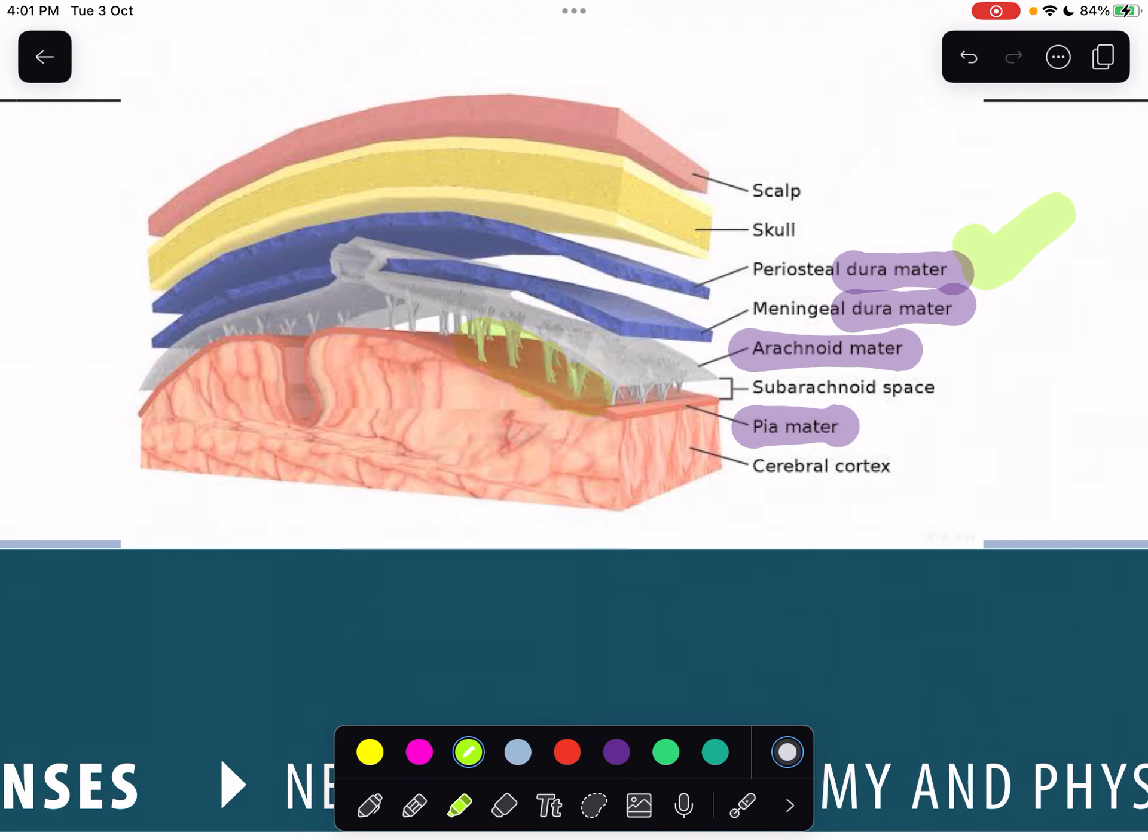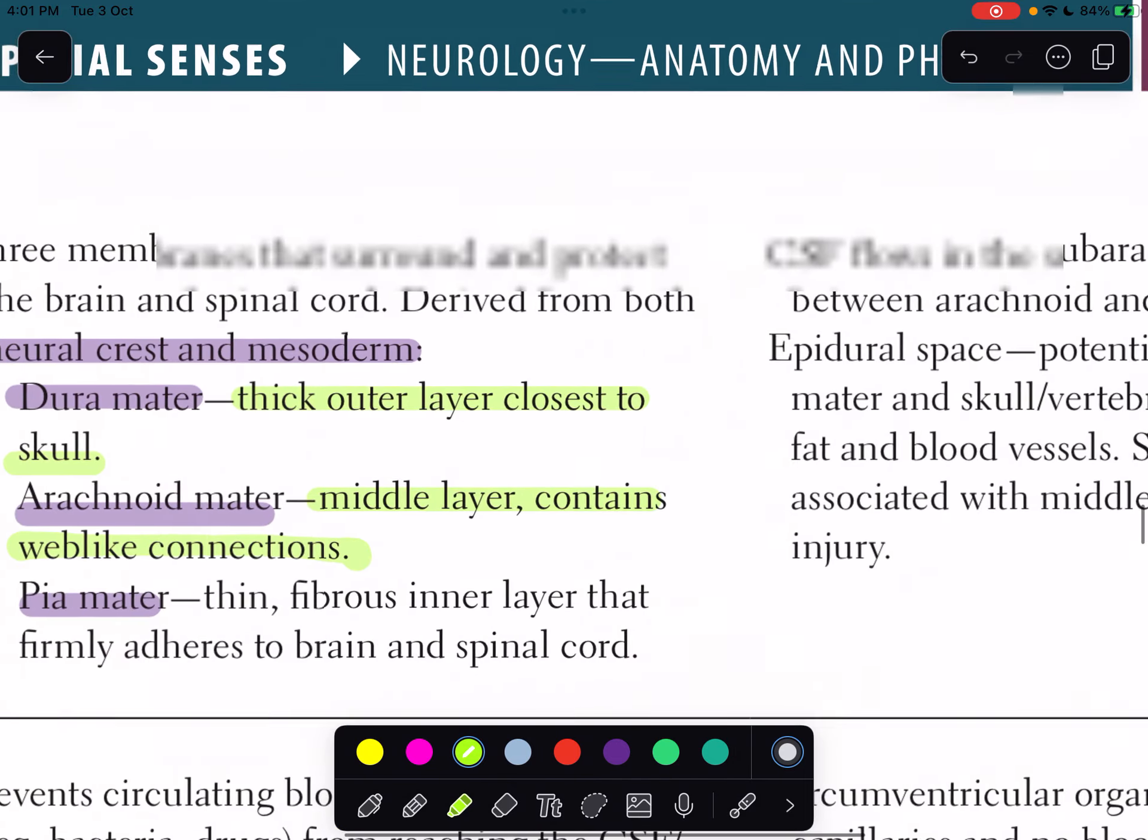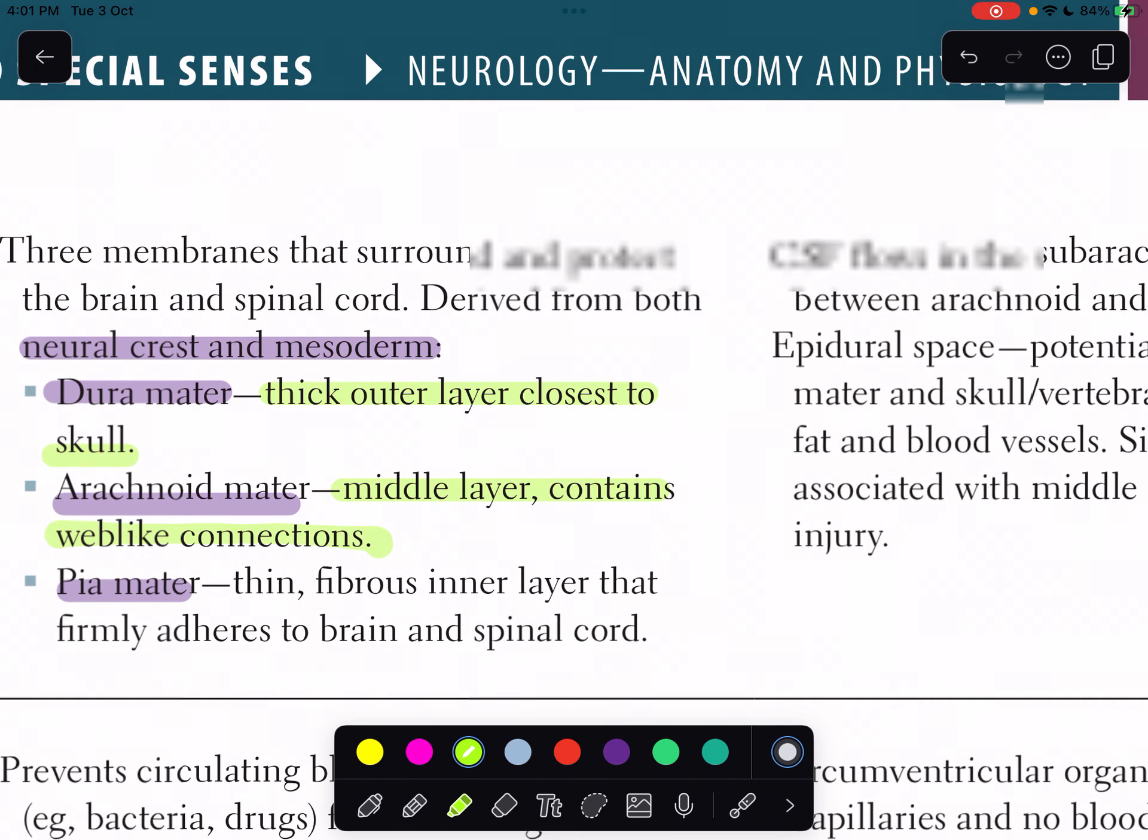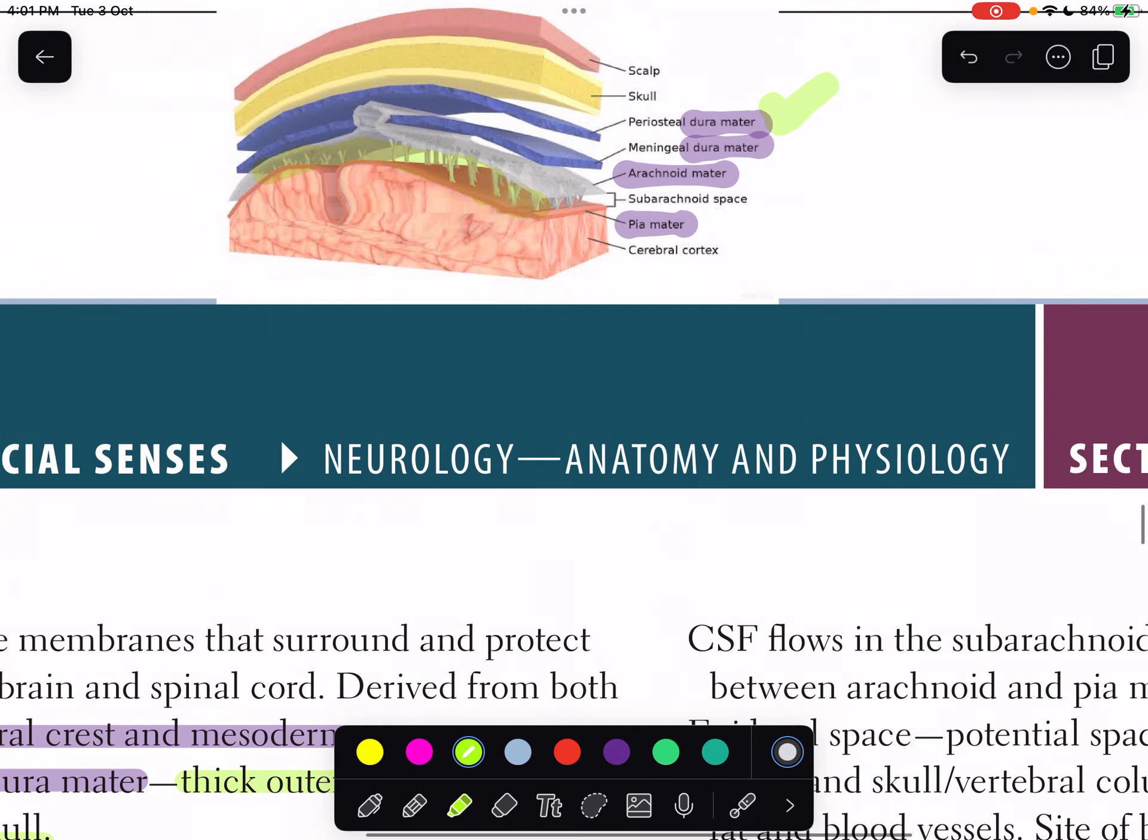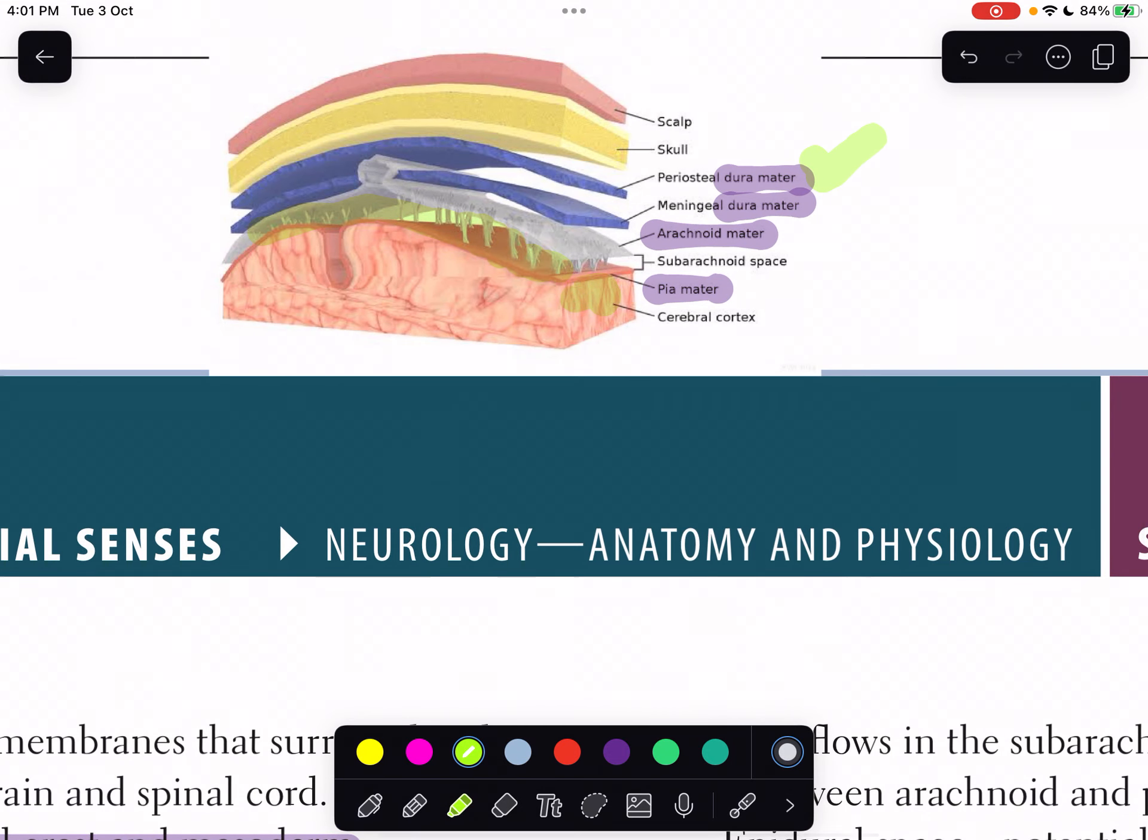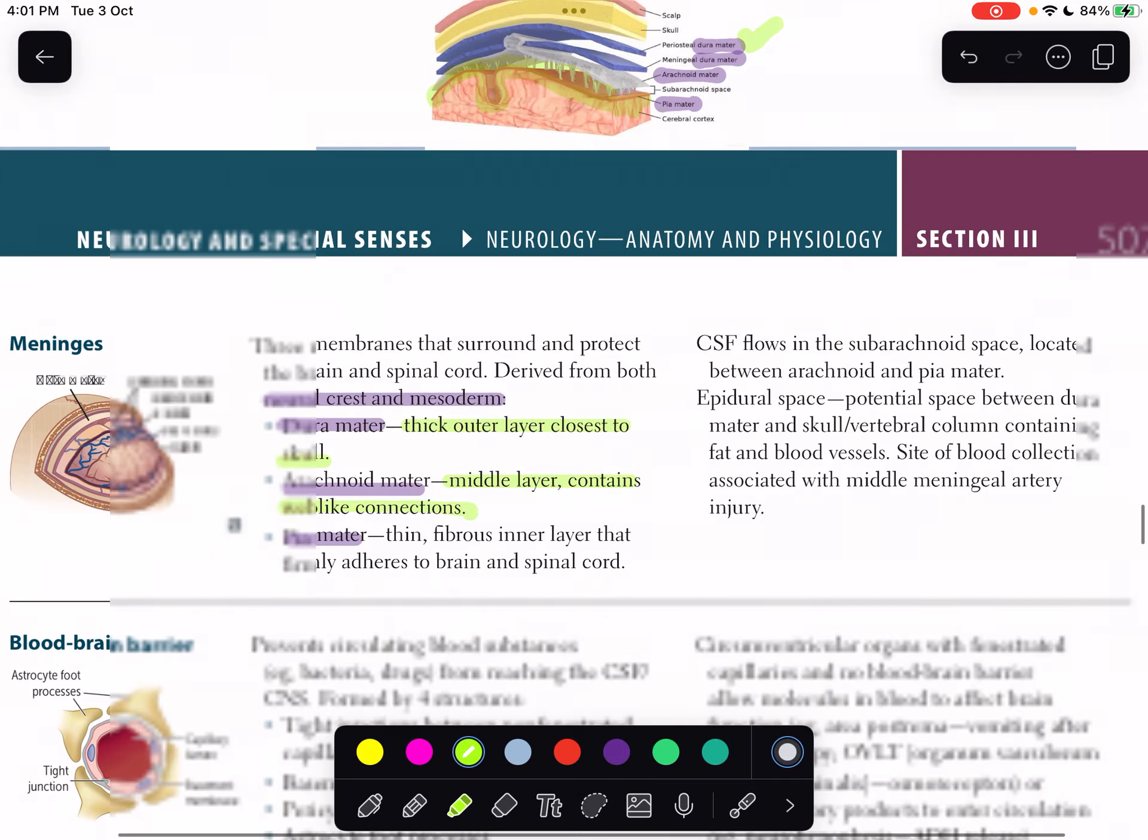We have pia matter, which is a thin and fibrous inner layer that firmly adheres to the brain and spinal cord. Here was the pia matter, adhering to the cerebral cortex.